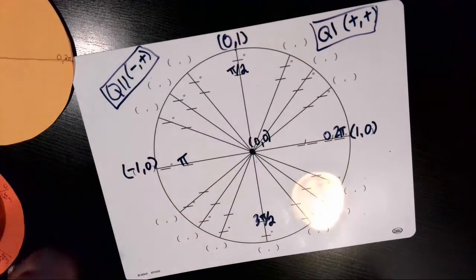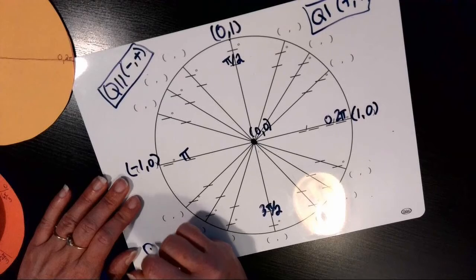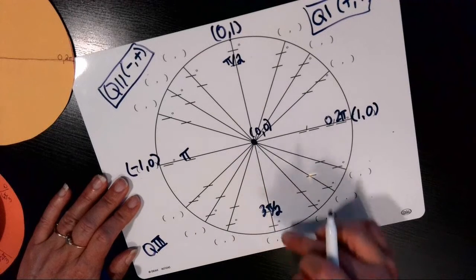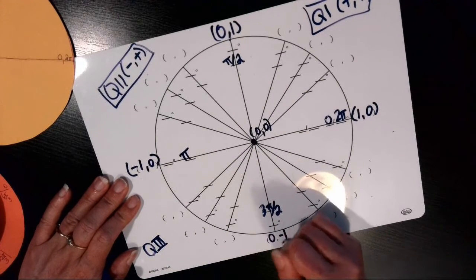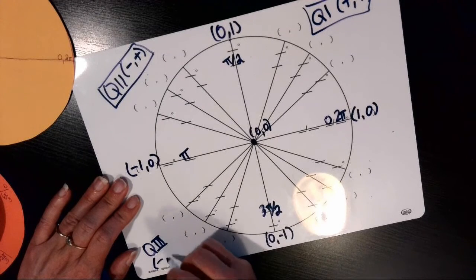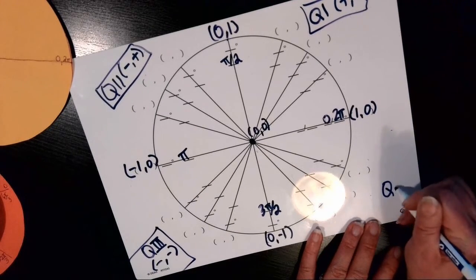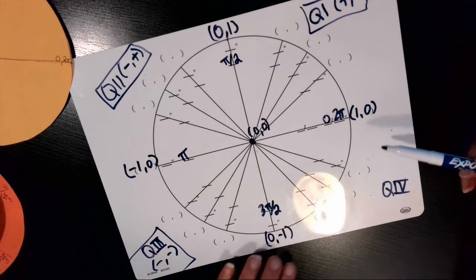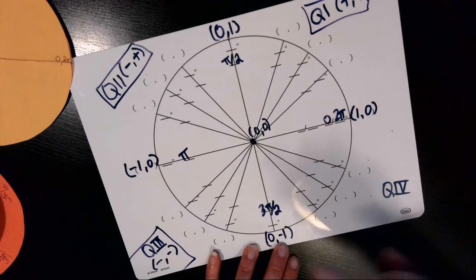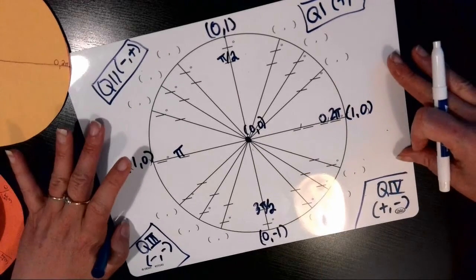In quadrant 3, from π to 3π/2, both x's and y's are negative. Going down 1 unit gives the point (0, −1), so all ordered pairs in quadrant 3 have a negative x and negative y. In quadrant 4, from 3π/2 to 2π, the x's are positive again but the y's are negative — positive and negative. Those are the four quadrants; we'll return to them when doing problems with sine and cosine.